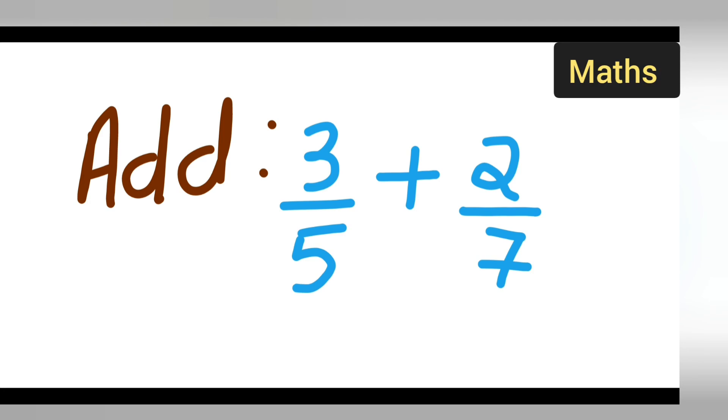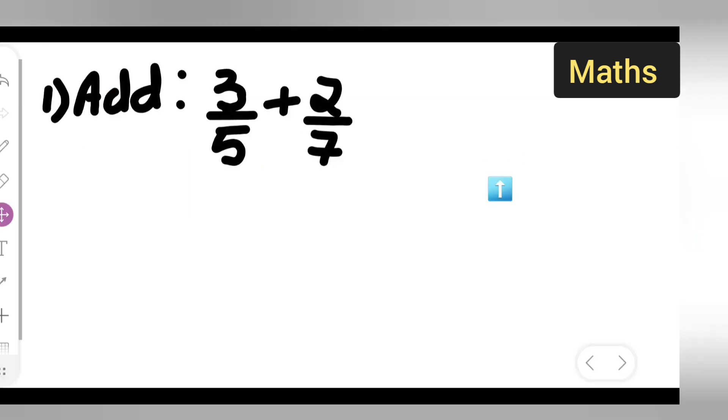Welcome to today's class of mathematics. Let us see how to add fractions when the denominator is different. We have 3 upon 5 plus 2 upon 7. Let's see how to add these two numbers. First, I can take down the question: add 3 upon 5 plus 2 upon 7.